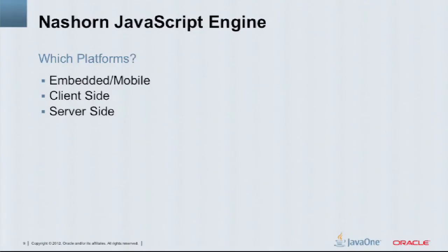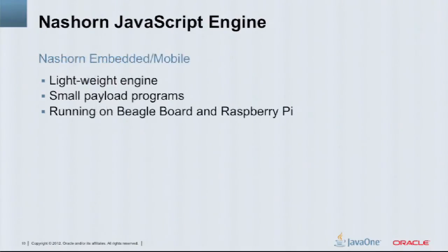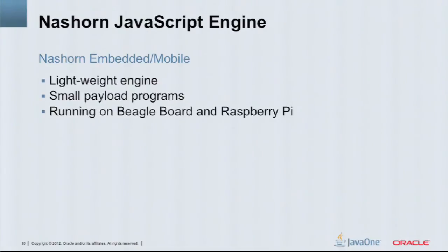Which platforms are we targeting? The three main ones initially are the embedded mobile market, the client side, and the server side. On the embedded side, because we're smaller, tighter, and faster, it fits quite well on small devices. We'll be doing a demo at the end — we're actually running NASHORN on a Raspberry Pi board. JavaScript is also a smaller payload because you have a small text item you can pass over the network rather than downloading a whole jar, so it works quite well on embedded systems.